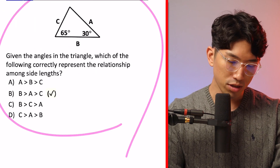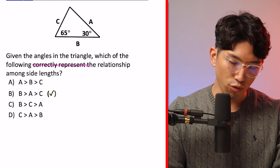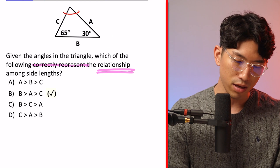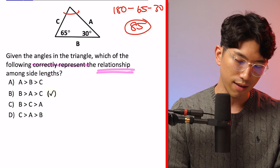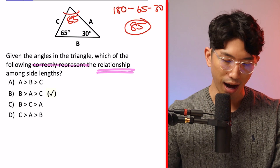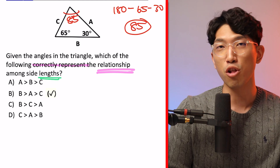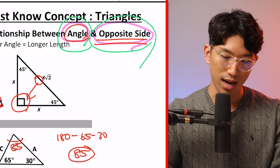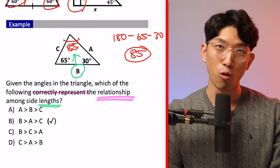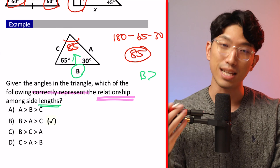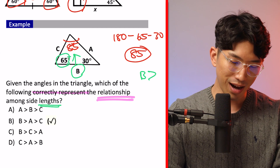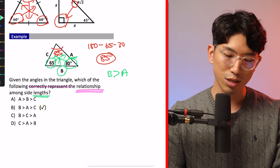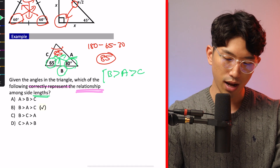Here's how this concept shows up on the SAT. The question says: given the angles in the triangle, which of the following correctly represents the relationship among the side lengths? We have angles of 65 and 30, which means the third angle is 180 minus 65 minus 30, which equals 85. So B is opposite the largest angle (85), making it the longest side. A is opposite 65, making it the second longest. And C, opposite the smallest angle (30), is the shortest. Putting it all together, the answer is choice B.